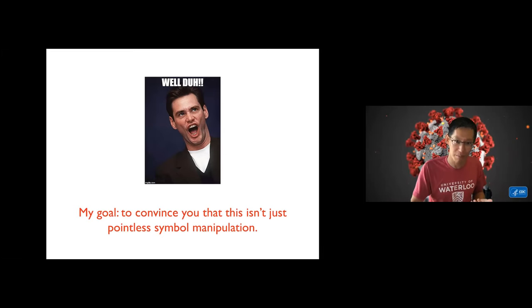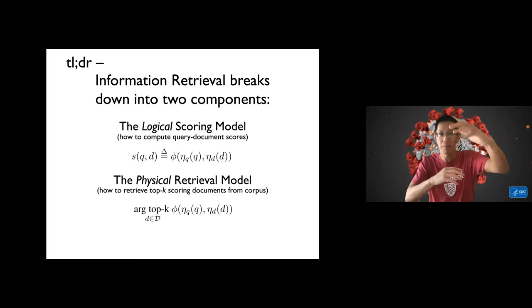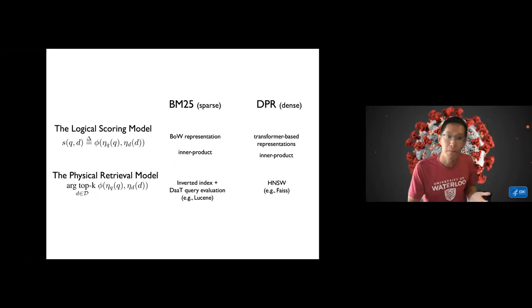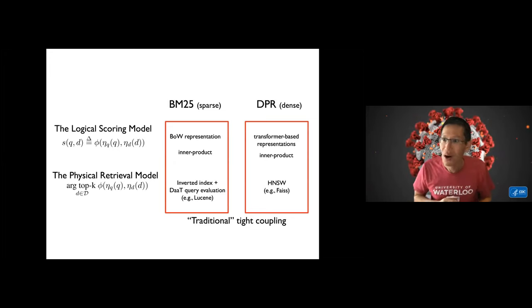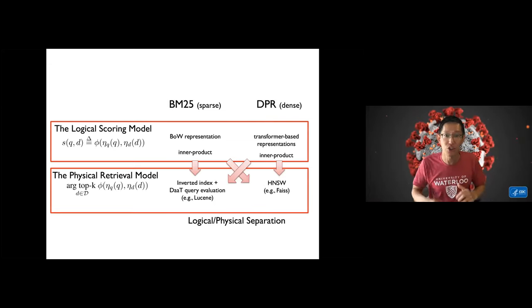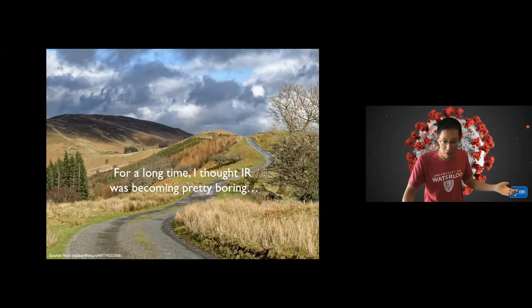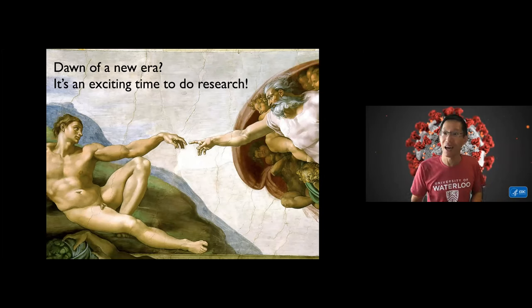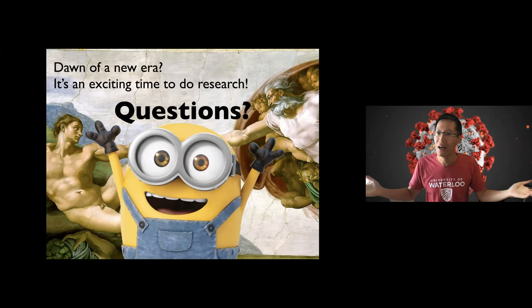Here's the case study. I want to start wrapping up. My goal was to convince you that this logical physical separation isn't just pointless symbol manipulation, and that breaking IR down into these components, the logical scoring model and the physical retrieval model, provides some insight and provides a nice conceptual framework to think about dense sparse retrieval and the relationship between the two. In summary, instead of thinking about tightly coupled approaches, sort of these vertical stacks, what we might be able to think about is these horizontal layers between logical physical separation, and that allows us to mix and match different logical scoring models with different physical realizations. For a long time I thought IR was becoming boring, but I don't think so anymore. Perhaps this is the dawn of a new era. I think it's an exciting time to do research and I'd be happy to hear your question, your feedback on this particular perspective. Thank you so much Jimmy, that was great. Questions from the audience?